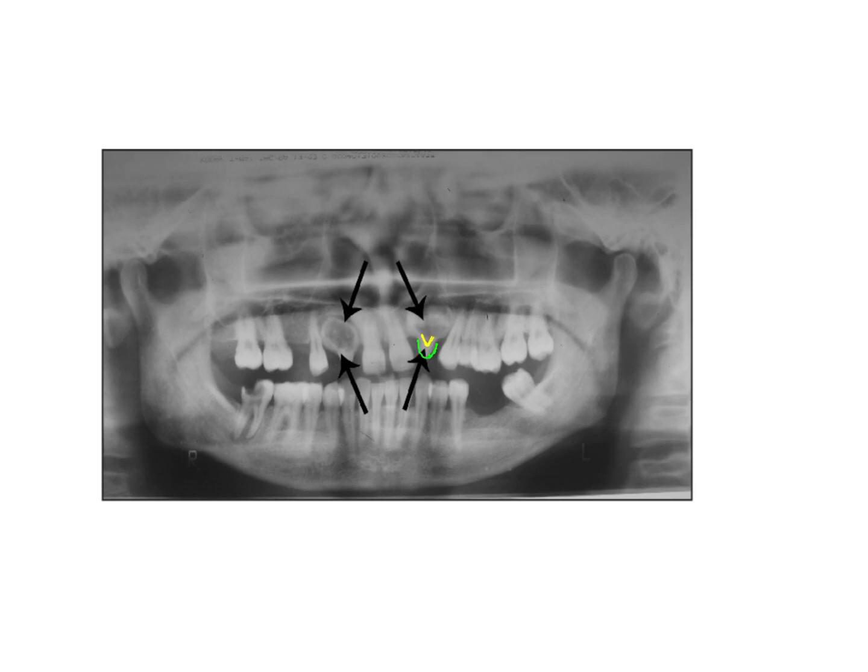That degree of radiopacity is attributed to enamel, so you have enamel present both outside as well as again within the pulp chamber. This is again giving a tooth-within-a-tooth appearance. You should be aware of these terms and be exposed to more picture-based questions, because they may ask these questions more often and frequently in the future.